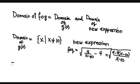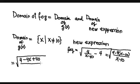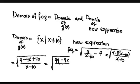Continuing, under the square root apply the distributive property and combine like terms: 4 minus 4(x - 10), which gives 4 minus 4x plus 40 over x - 10. Combining like terms we get (44 - 4x) / (x - 10).